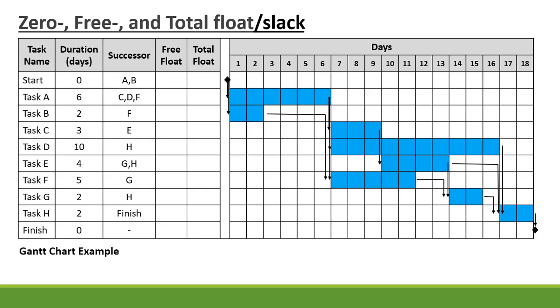In the example that we will be using, we have eight activities — Task A to Task H — with the duration as well as the successor activities of each activity.